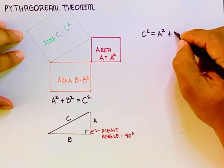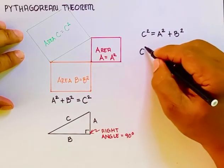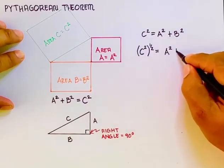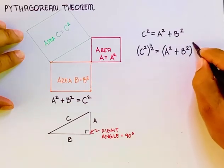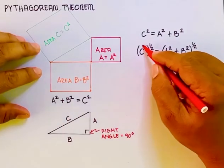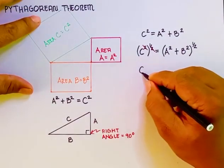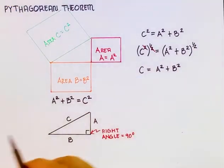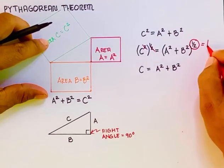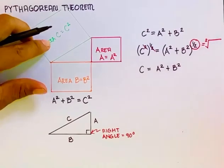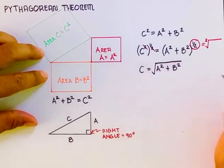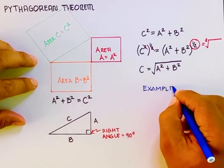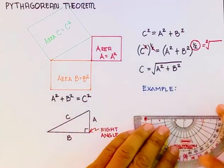So the formula, again, C square is equal to A square plus B square. So C square raised to the power one half, that's equal to A square plus B square. Now, I would like to cancel out C square and one half. So that can be canceled out, remaining C. So on the other side of the equation, A square plus B square is raised to the one half because one half is another name for square root. So therefore, the square root of A square plus B square.